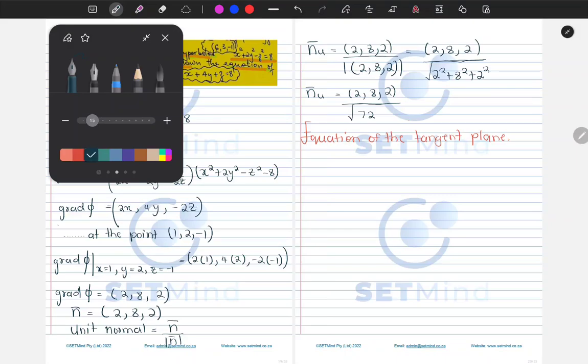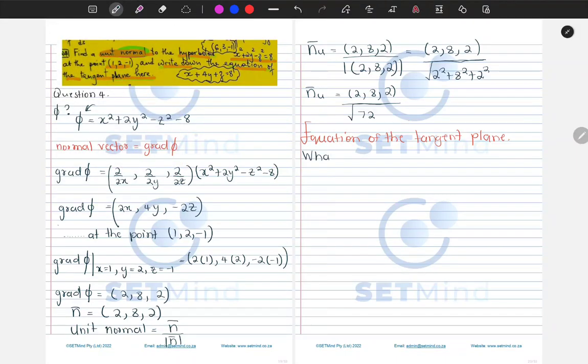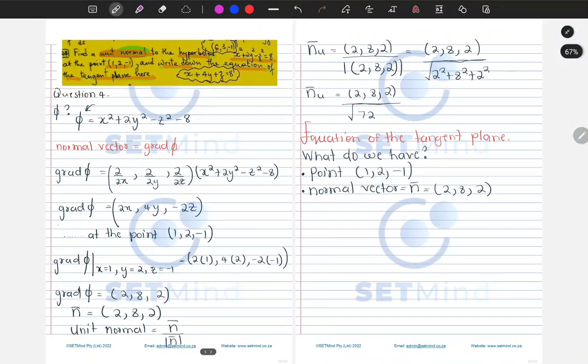So we need to clearly detail exactly what do we have. What we have, number one, is a point, which was given as (1, 2, -1). And what we also have, which will assist us, is the normal vector, which is equal to (2, 8, 2). So we only need these two to be able to find the equation of the plane.